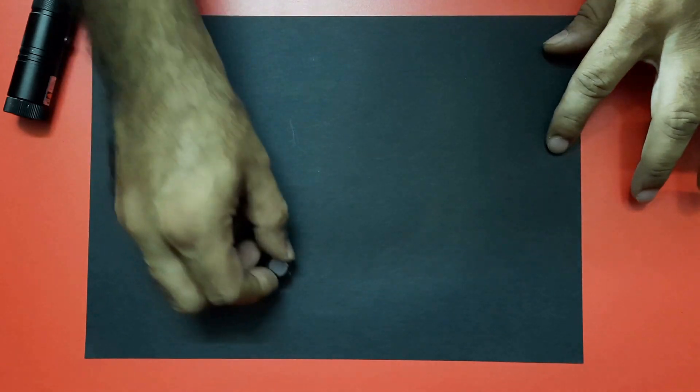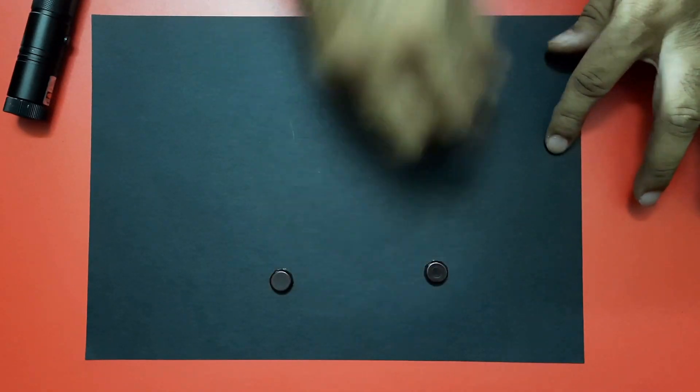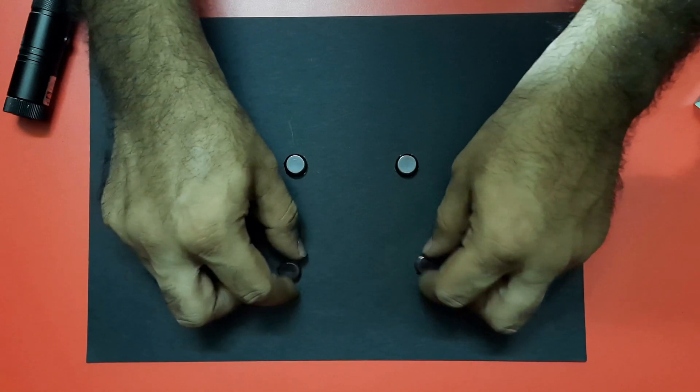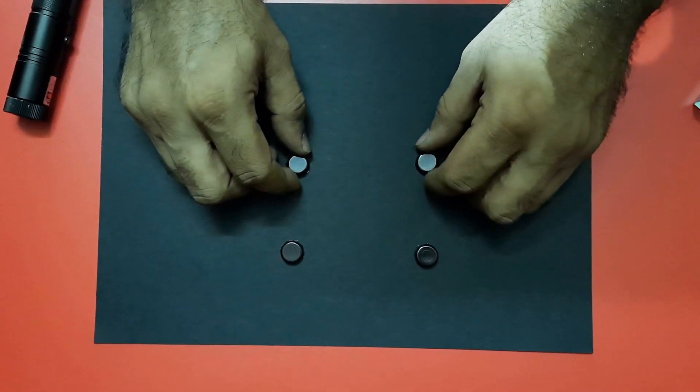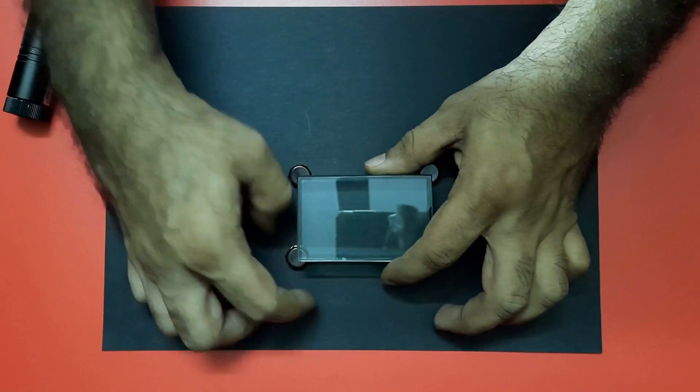We have placed four tablets on the black paper which serve as a platform for the glass slab. Friends, these are simple paracetamol tablets used to raise the glass slab slightly above the surface for better clarity of the laser beam.